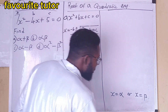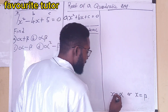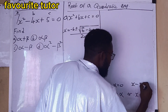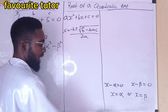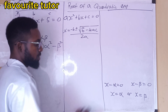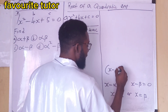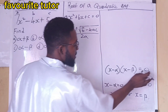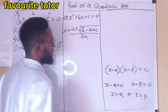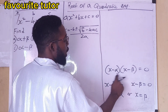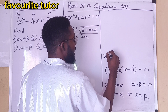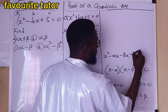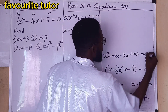Now let us move further. If these are the roots of the equation, then this is the same as (x minus alpha) equals zero or (x minus beta) equals zero. Taking the roots to the left-hand side gives us (x minus alpha)(x minus beta) equals zero. If I expand the left-hand side and open this bracket, I get x squared minus alpha·x minus beta·x plus alpha·beta equals zero.